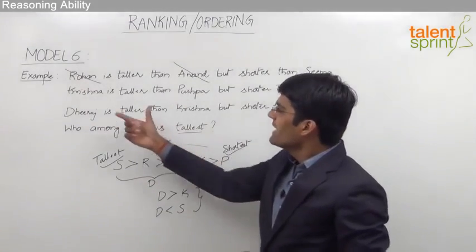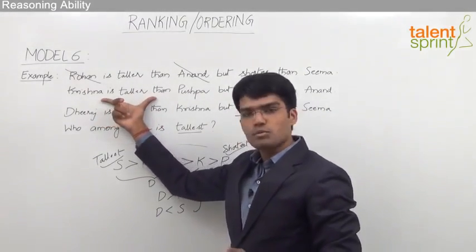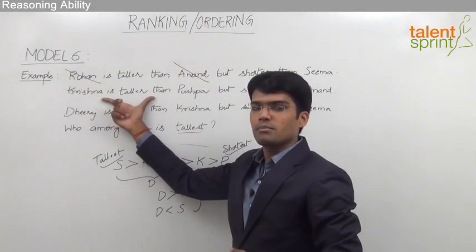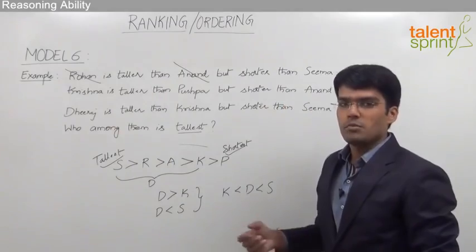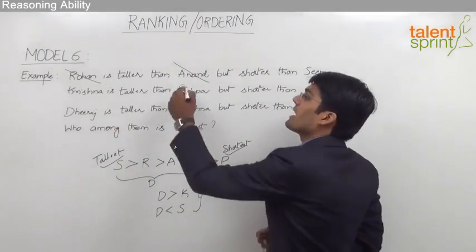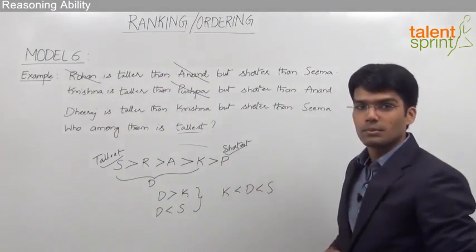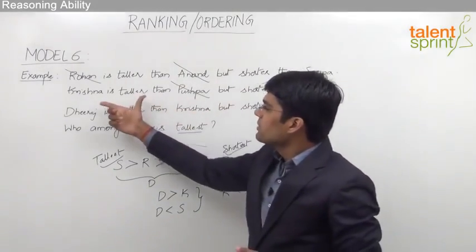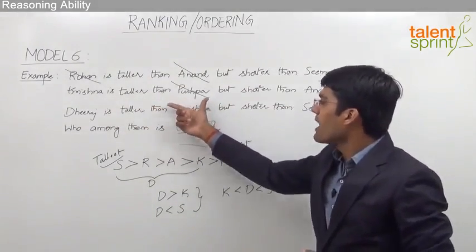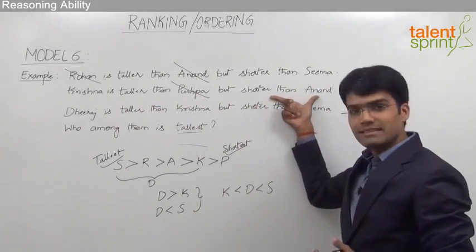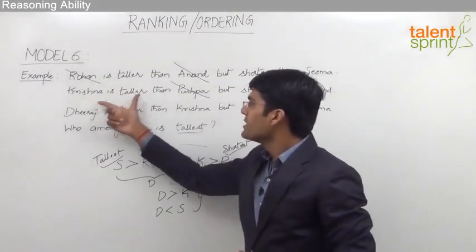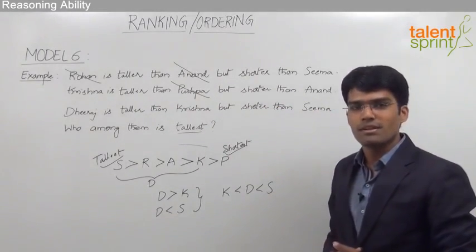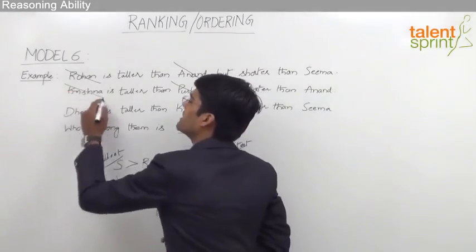From the next statement, Krishna is taller than Pushpa — so Pushpa is shorter than Krishna and cannot be the tallest. Krishna is shorter than Anand, so Krishna cannot be the tallest either. Both Pushpa and Krishna are eliminated.